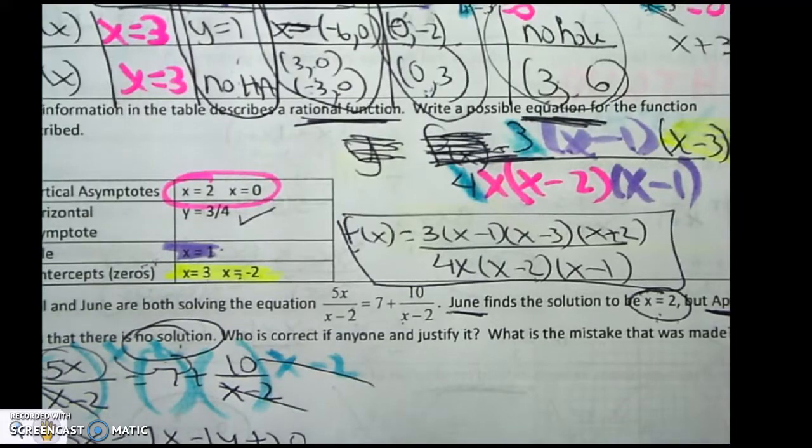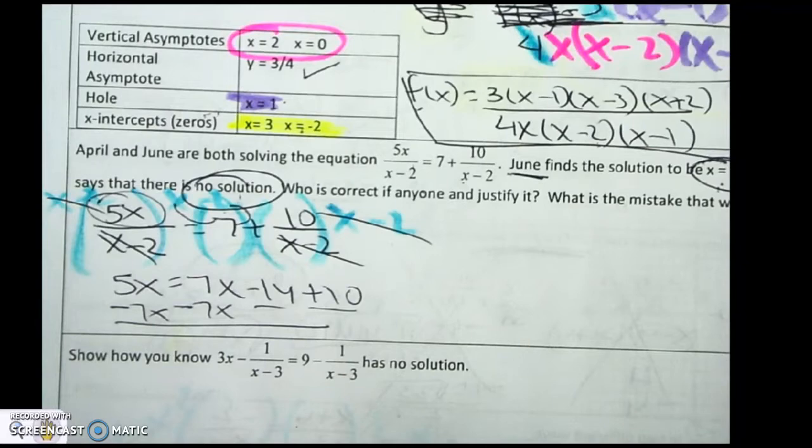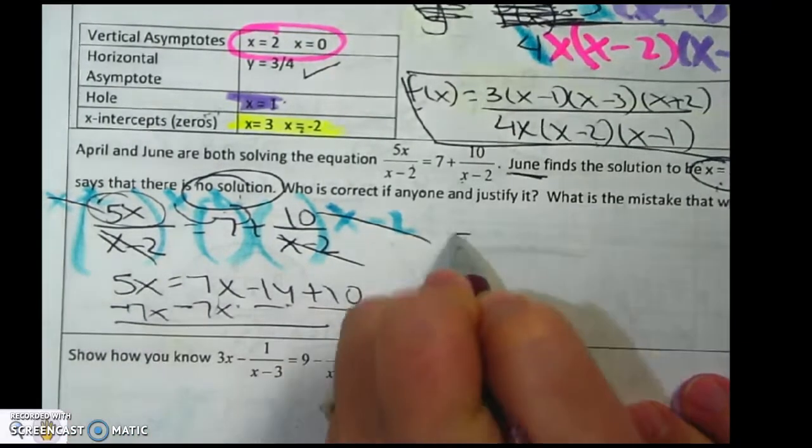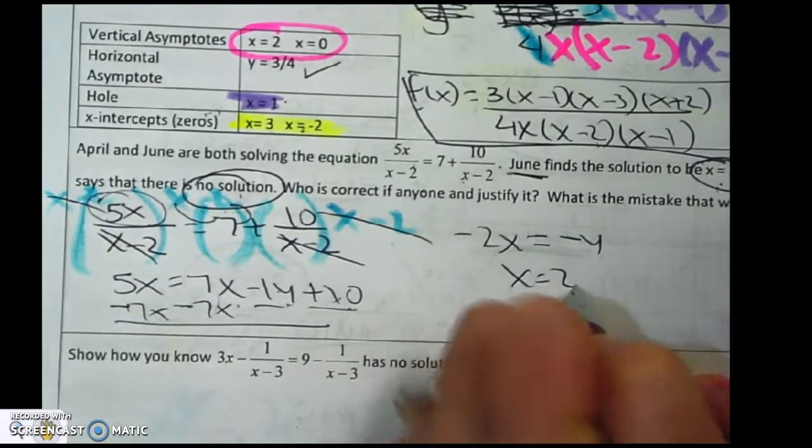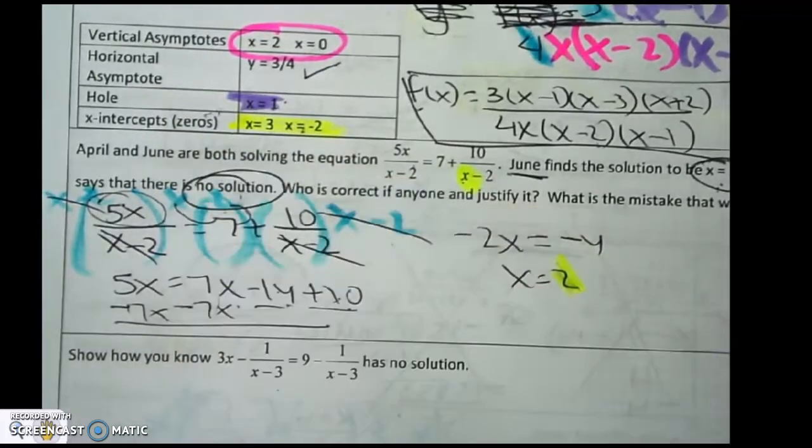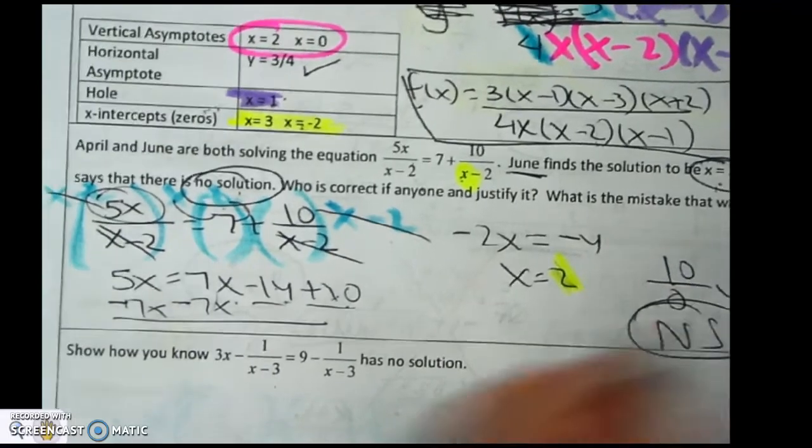Simplify and move the 7x over. I'm doing it all. Oops, I'm sorry. You can't see that. Make that look better. So I said move this over and put these two together. So I get negative 2x equals negative 4. x equals 2. But then when you take 2 and you plug it in, 10 over 0 is undefined. That's why it's no solution.